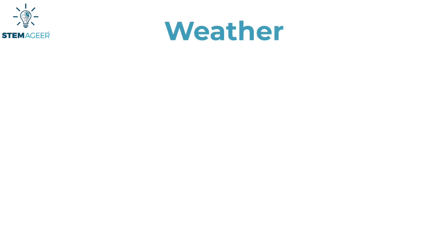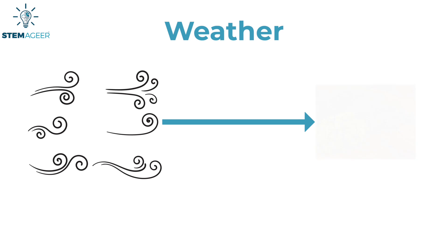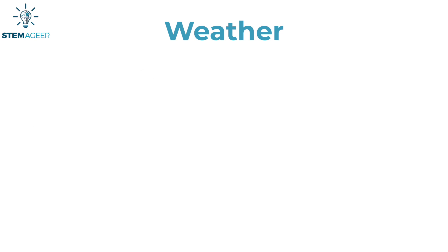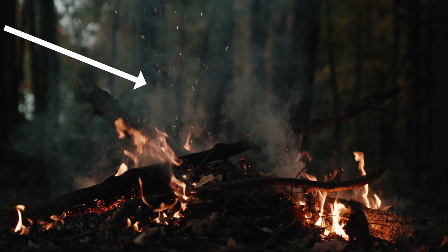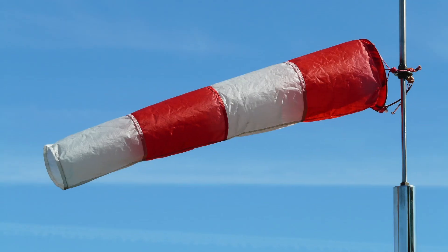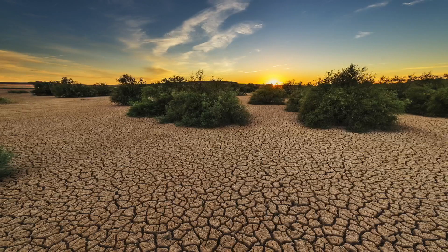Weather can affect how wildfires spread too. Wind can impact fuel sources and cause a fire to spread. For example, in the western United States there are warm, dry winds called the Santa Ana winds that typically happen in the fall. These winds blow over land, which can dry out vegetation and cause a wildfire to spread. The winds can also blow embers — small pieces of fire — to other locations, setting nearby vegetation and homes on fire. The Santa Ana winds can reach over 100 miles per hour. Additionally, long periods without rain can cause droughts, which dry out fuel sources like grass, making them easier to ignite.